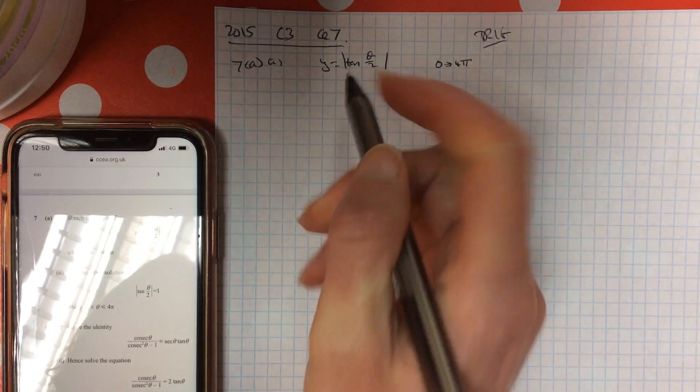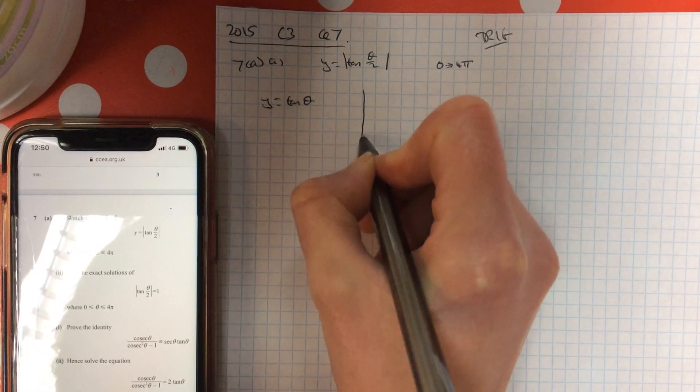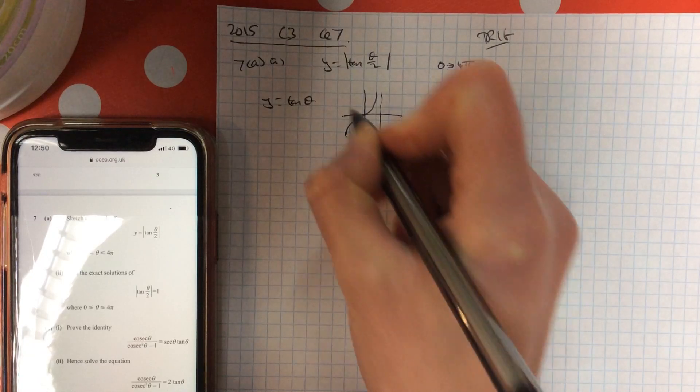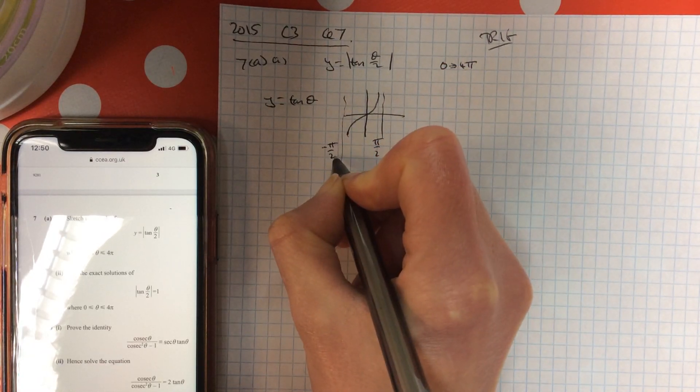Starting off with sketching the graph of this. So I'm going to start off as I normally do, just with the standard tan graph. And that is asymptote at pi over 2 and minus pi over 2.